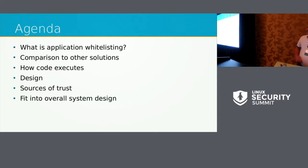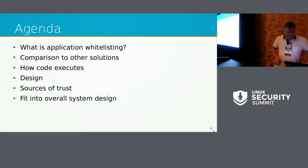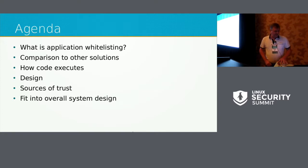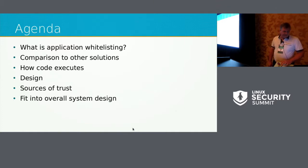This is the outline of what we're going to be talking about. We're going to cover what application whitelisting is, compare it to other solutions, how code executes, the design of a solution, sources of trust, and how this might fit into an overall system design.